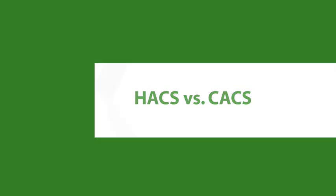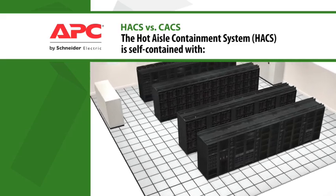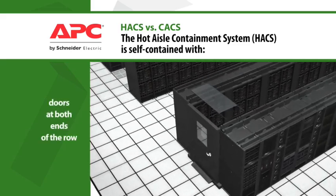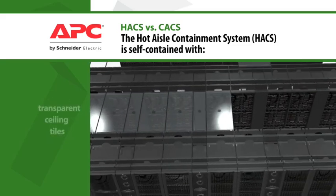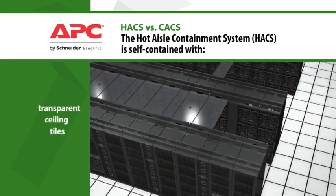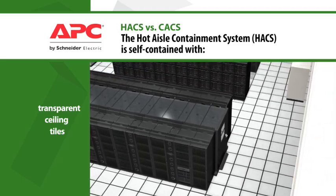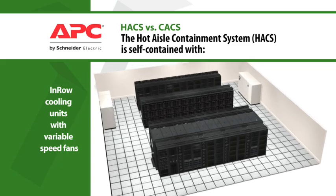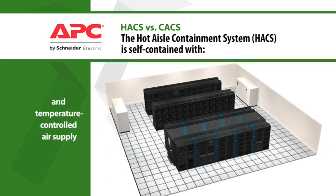APC's Hot Aisle Containment System, or HACS, consists of doors that cap both ends of the row, transparent ceiling tiles, and APC's own in-row cooling units with variable speed fans, and a temperature-controlled air supply to the cold aisle.